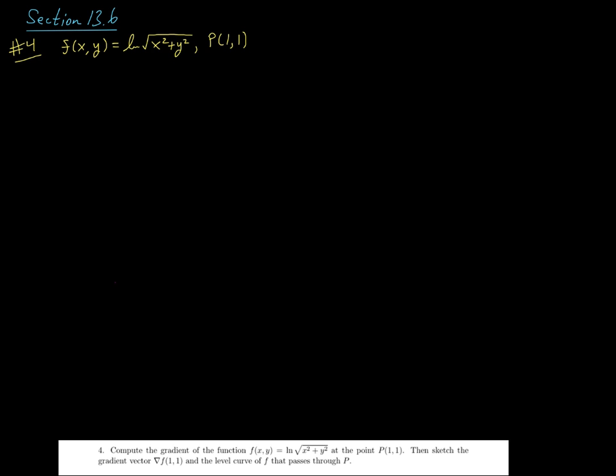Here in question number four for section 13.6, we're asked to compute the gradient. The function f(x,y) is the log of the square root of x squared plus y squared at the point P with coordinates (1,1). Then sketch the gradient vector at (1,1) and the level curve of f that passes through P.